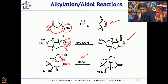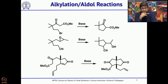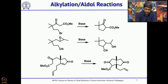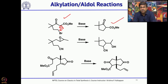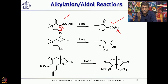Alkylation, aldol reaction, Michael addition, or opening of epoxides have all been used successfully for making 5-membered rings. For example, if you have a beta-ketoester, you can easily generate an anion, and an intramolecular SN2 substitution will give the 5-membered ketone. If you decarboxylate, you get the corresponding ketone; otherwise you retain the beta-ketoester.